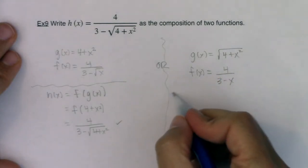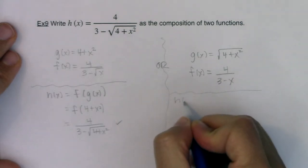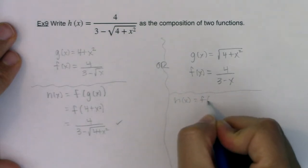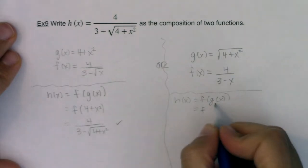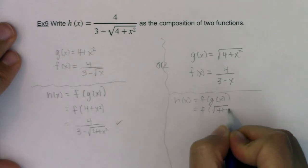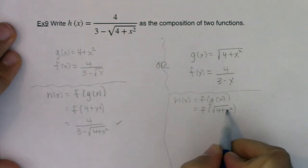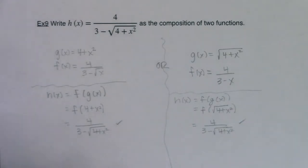And let me show you how this would work. So now I'm going to do h of x, and that's still f of g of x. So this would be f, well, g of x is the square root of 4 plus x squared. If I take square root of 4 plus x squared and plug it into my f function, this will be 4 over 3 minus the square root of 4 plus x squared. So there's a different way of doing it.